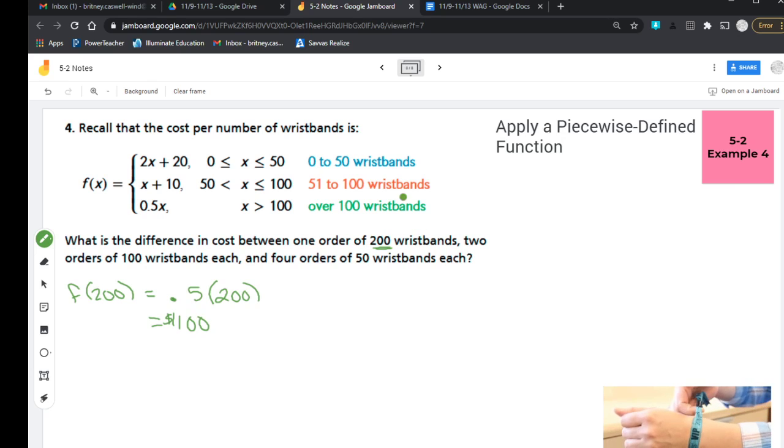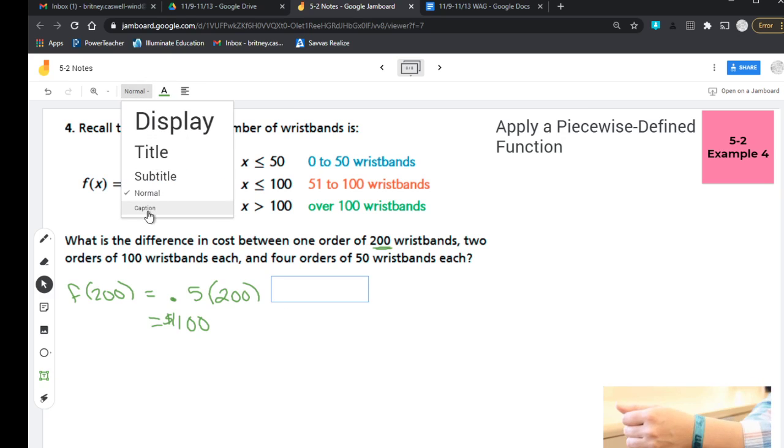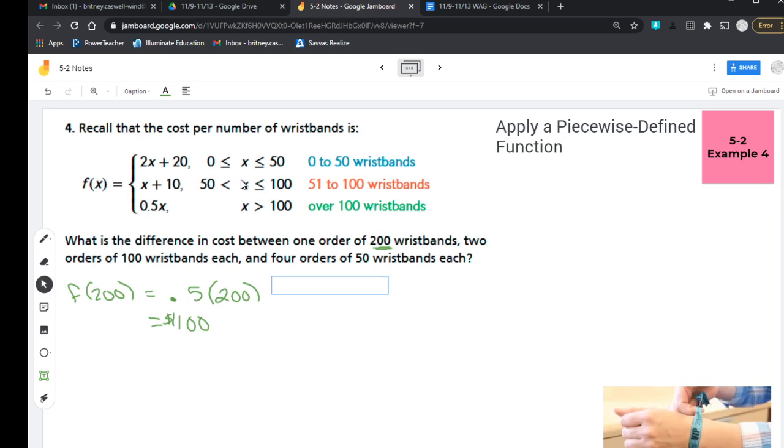So f(200) would then be $100. So one order of 200 wristbands is $100. And so I'm going to actually type that out just to remind myself here in just a moment. Because if y'all know me, I'm super forgetful about that. So one order of 200 wristbands costs $100.